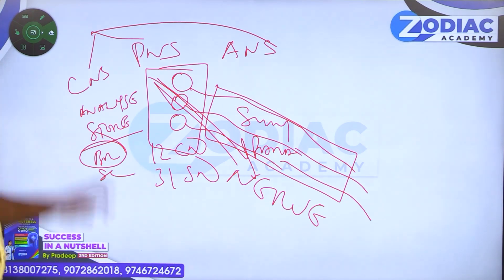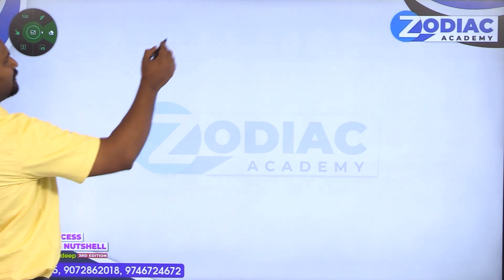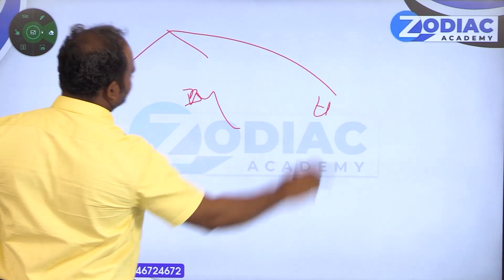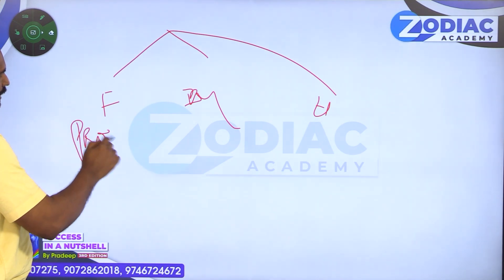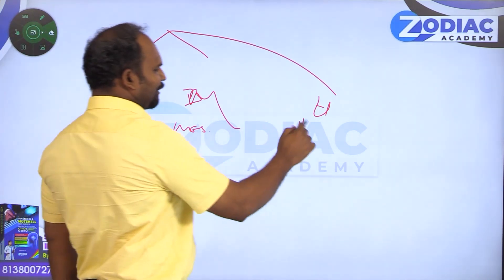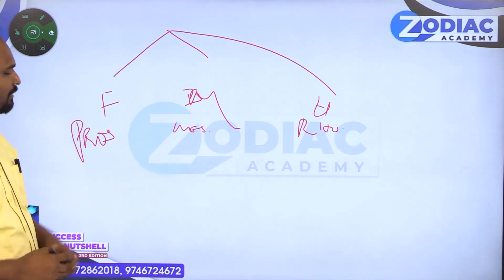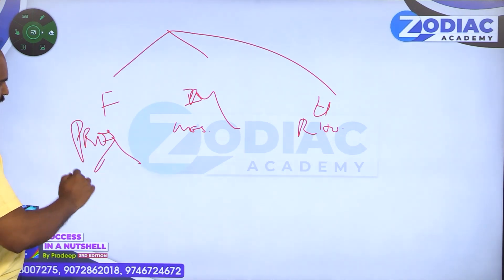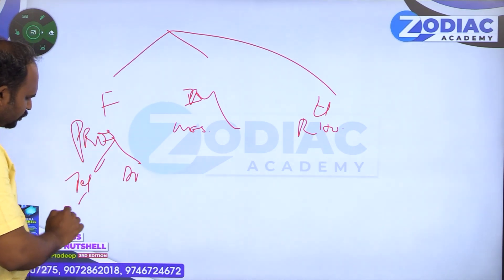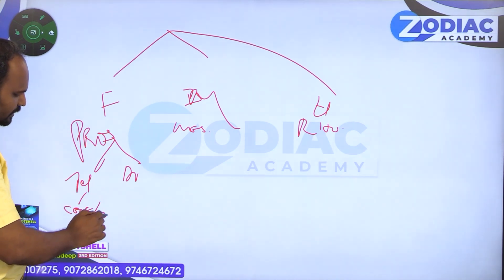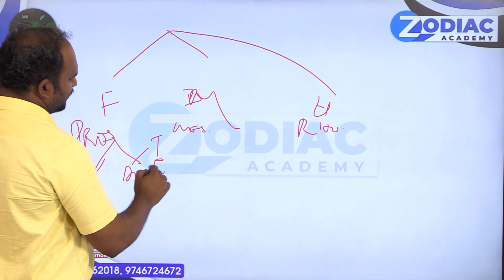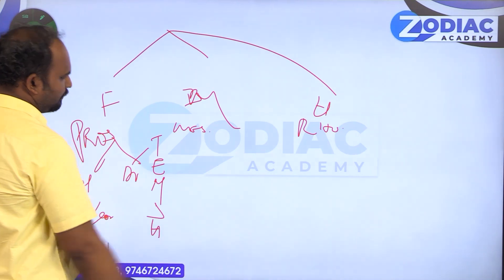The brain is divided into three parts: forebrain (prosencephalon), midbrain (mesencephalon), and hindbrain (rhombencephalon). The prosencephalon is divided into telencephalon and diencephalon. The telencephalon has two cerebral hemispheres and the corpus callosum. The diencephalon has five thalamic structures: hypothalamus, thalamus, epithalamus, metathalamus, and subthalamus.